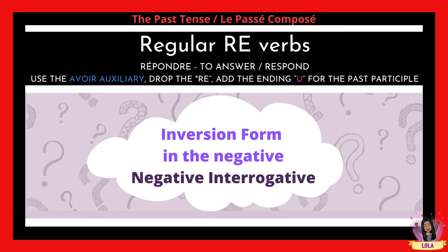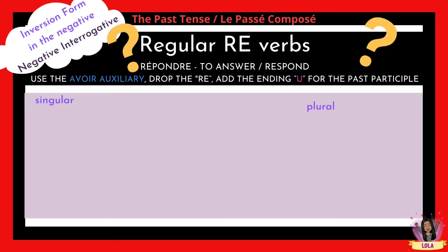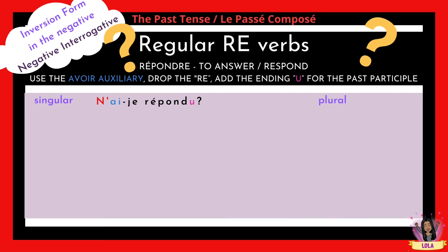Moving on to the inversion form in the negative — the negative interrogative. Starting with the singular: the interrogative alone is ai-je répondu. Now we make it negative. The n-apostrophe goes before the auxiliary, and again it's an apostrophe because ai starts with a vowel. The pas goes after the subject, so it becomes n'ai-je pas répondu.